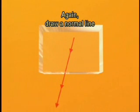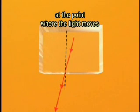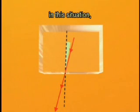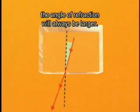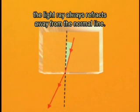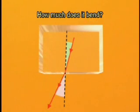Again, draw a normal line at the point where the light moves from one medium to another. Compared to the angle of incidence, in this situation, the angle of refraction will always be larger. In other words, the light ray always refracts away from the normal line. How much does it bend?